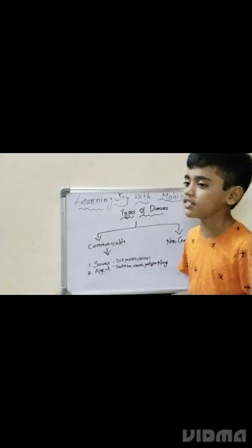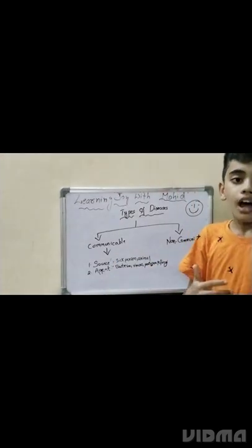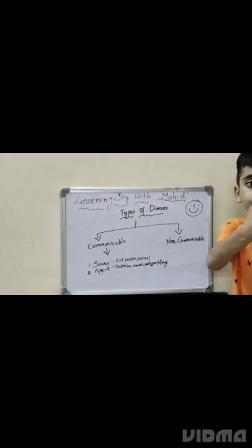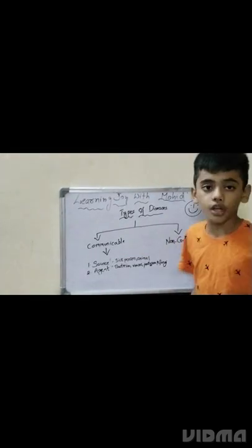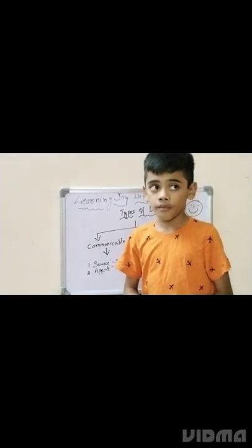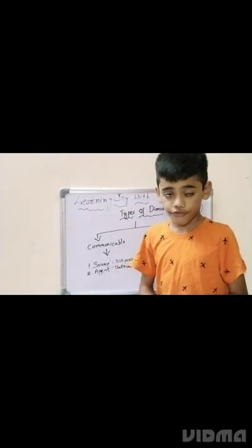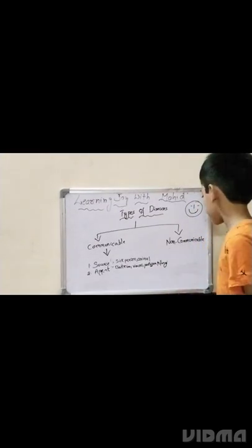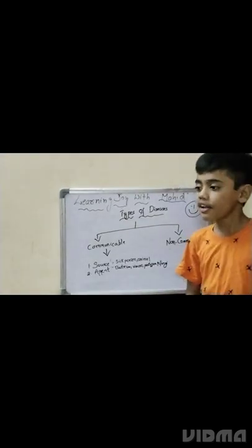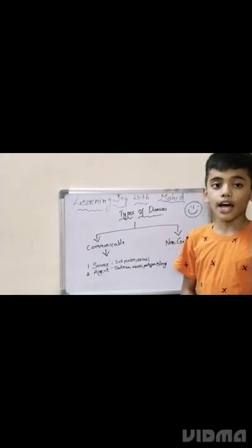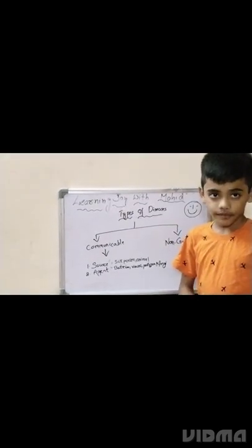Non-communicable diseases do not spread from person to person. Examples of communicable diseases are fever, cold, cough, malaria, chickenpox, etc. Non-communicable diseases include sugar, BP, and thyroid.